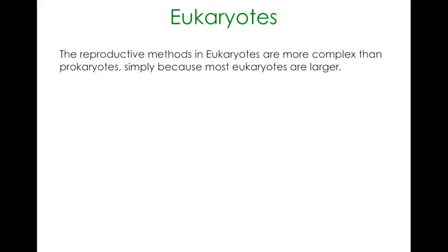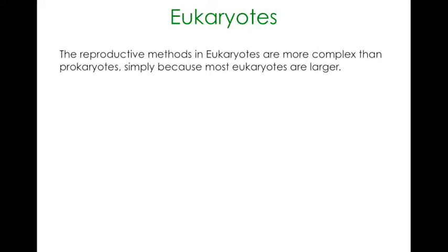The methods in eukaryotes are often more complicated than the ones in prokaryotes, mainly because eukaryotes are larger, they've got membrane-bound organelles and their structures are simply more complex, so that process of reproduction will take more time and more energy. But here's just a few different methods that they can use.